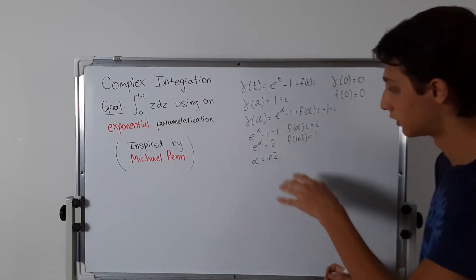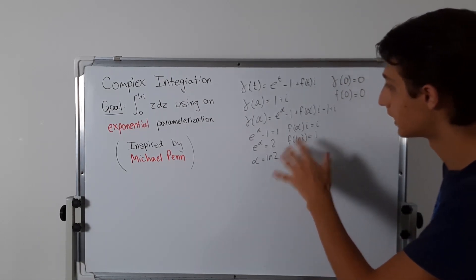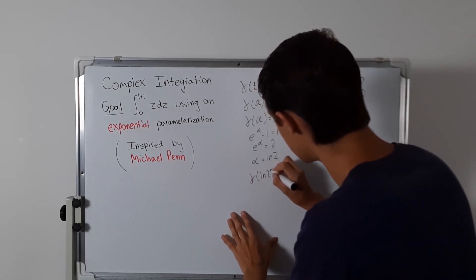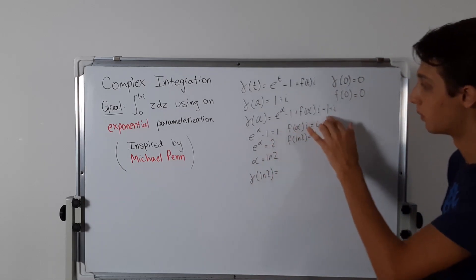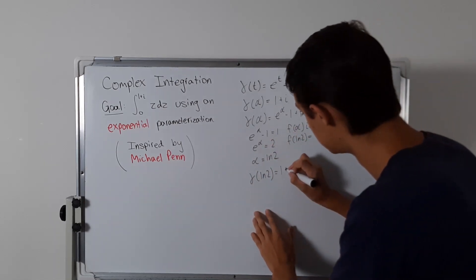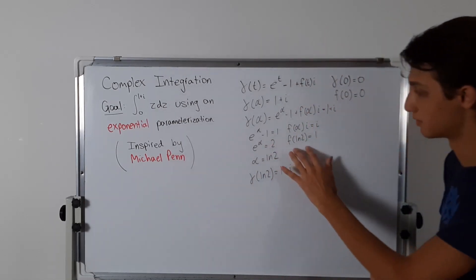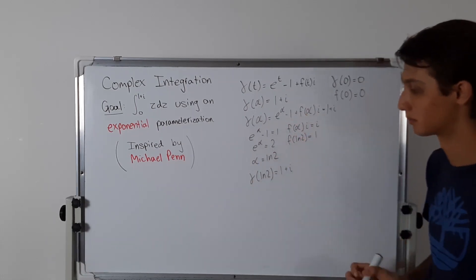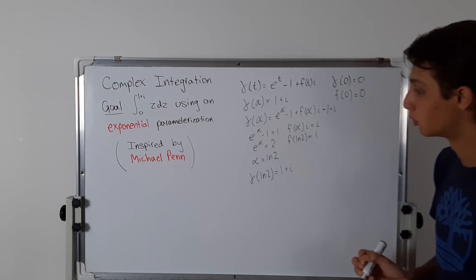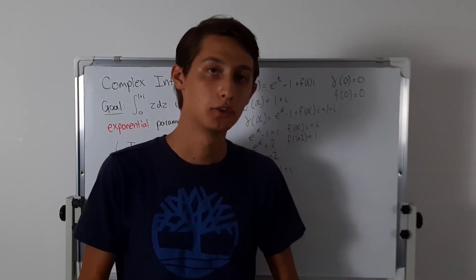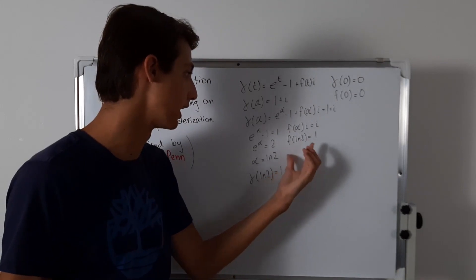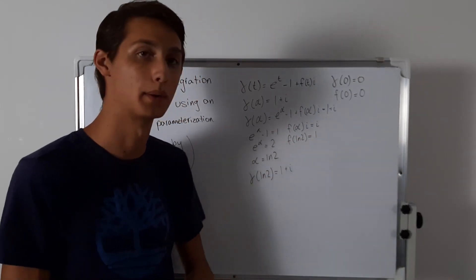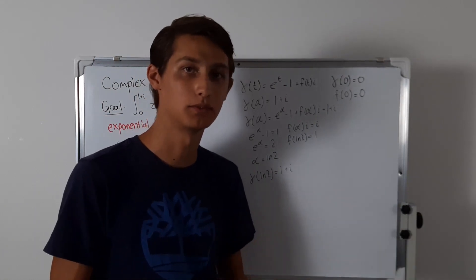This is what we have. Gamma of ln 2 is going to be equal to 1 plus i, where f of ln 2 equals 1, because otherwise it wouldn't work. So now we need to determine what f is, because all we have is coordinate points: 0, 0, and ln 2 comma 1. We need to figure out what f is.